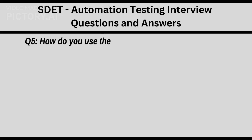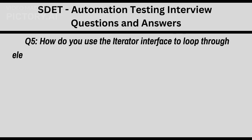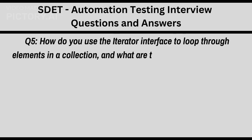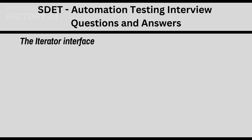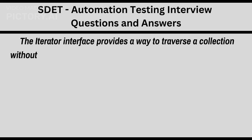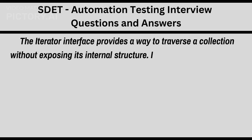Q5: How do you use the Iterator interface to loop through elements in a collection, and what are the advantages of using it over a simple for loop? The Iterator interface provides a way to traverse a collection without exposing its internal structure.